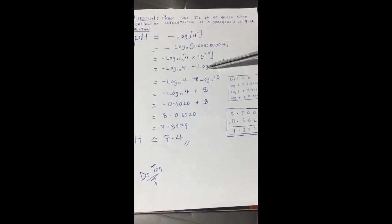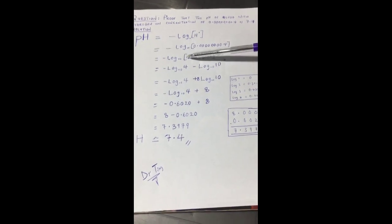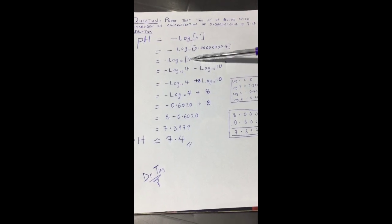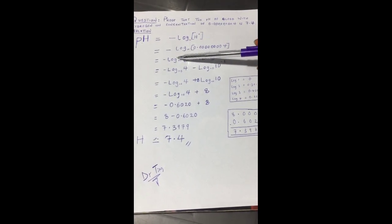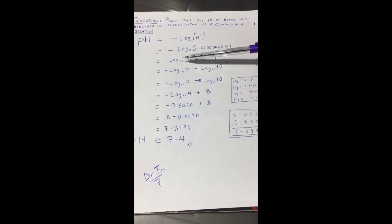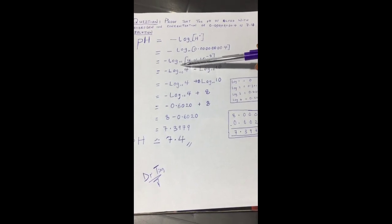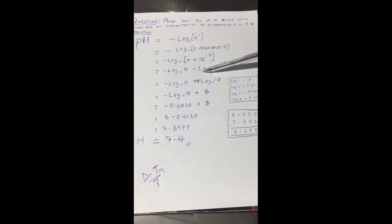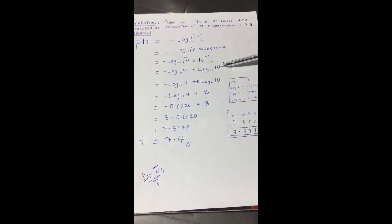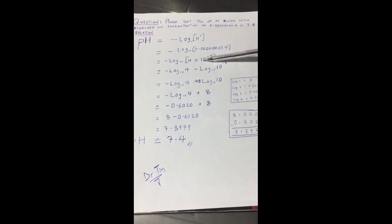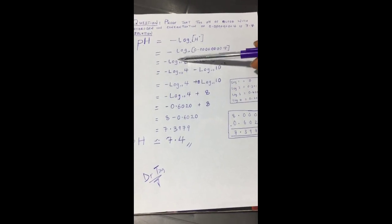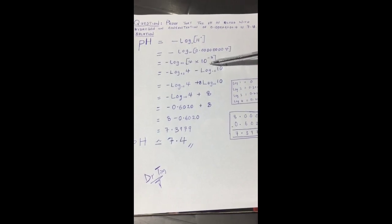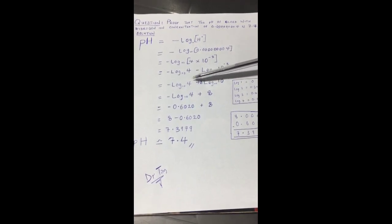The next step is that since there are now individual numbers, you can use what is outside the brackets to multiply what's inside the brackets. You can make them separate now, so it becomes negative log to base 10 of 4 and negative log to base 10 of 10 to the power minus 8.